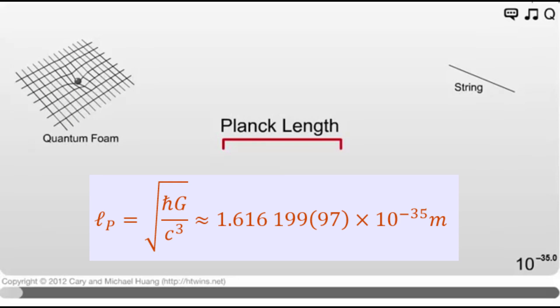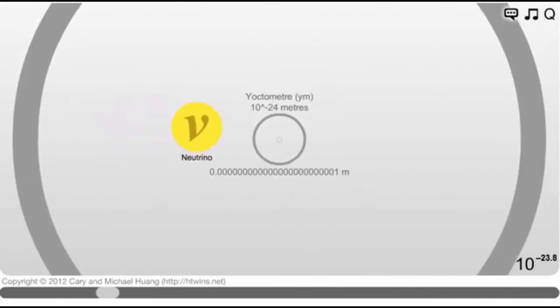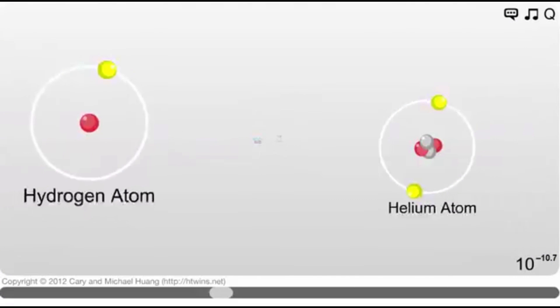Planck's length is the smallest possible measurable length of our universe. So far we know that nothing can be smaller than it. This length is unimaginably small, much more smaller than the atom itself. So it might be possible that a three-dimensional grid whose each cube has a side of Planck's length is the grid of our universe, something like the Game of Life.